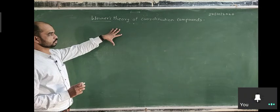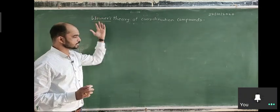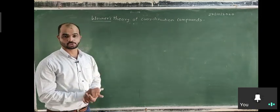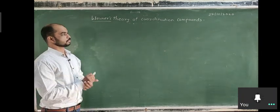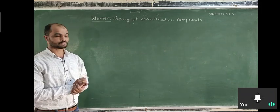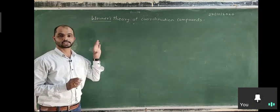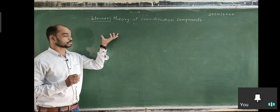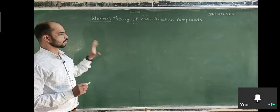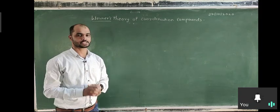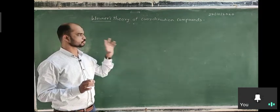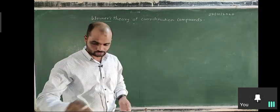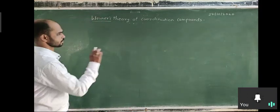Once he understood coordination compounds, he suggested some observations — these are the postulates, the assumptions he introduced. These assumptions help us understand coordination compounds, their structure, and geometry. Once we know the molecular formula of coordination compounds, our next aim is to predict their structure and geometry. Werner's theory helps us determine the possible structure of a given coordination compound.